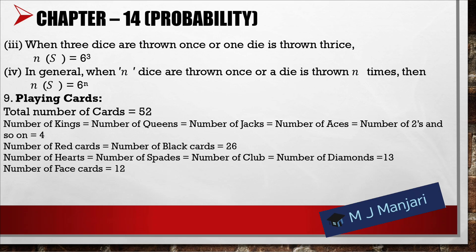Playing cards: total number of cards = 52. Number of kings = number of queens = number of jacks = number of aces = number of 2s (and so on for each denomination) = 4. Number of red cards = number of black cards = 26. Number of hearts = number of spades = number of clubs = number of diamonds = 13. Number of face cards = 12.